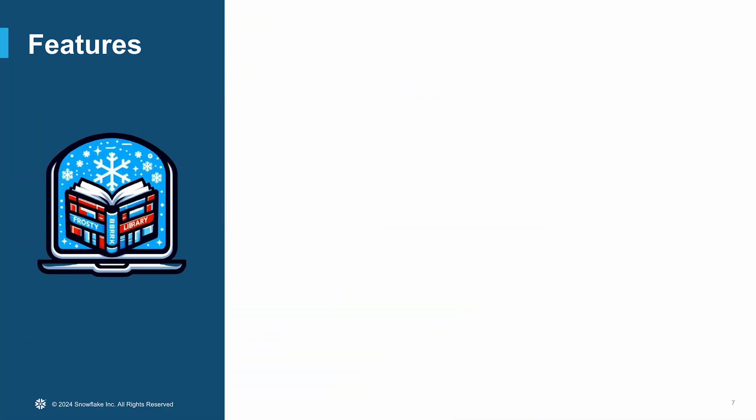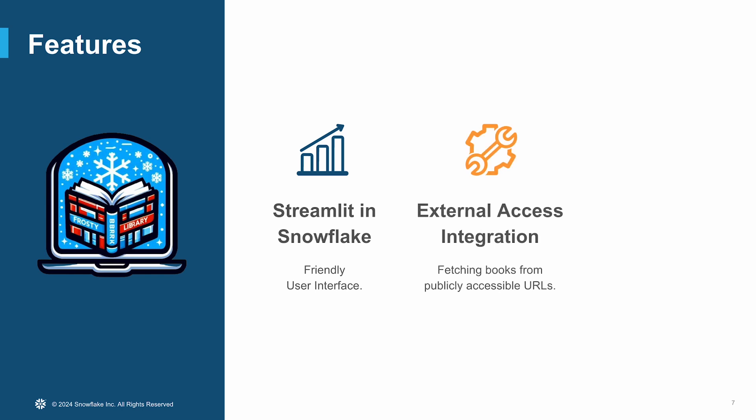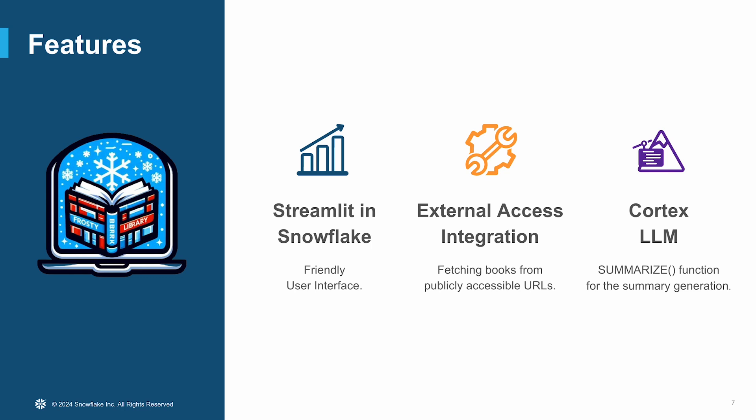Now, which are the features that you will see in action in this demo? Firstly, Streamlit in Snowflake, which provides the user interface. Secondly, leveraging user-defined functions (UDF) with the external access integration, Frosty Library can fetch books from the internet. Lastly, the Summarize function is one of the Cortex LLM features — it's the core of the summary generation.